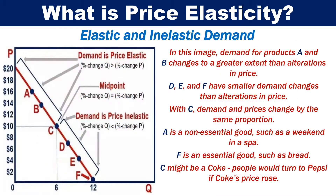In this image, demand for products A and B changes to a greater extent than alterations in price. D, E and F have smaller demand changes than alterations in price. With C, demand and prices change by the same proportion. A is a non-essential good, such as a weekend in a spa. F is an essential good, such as bread. And C might be a Coke.